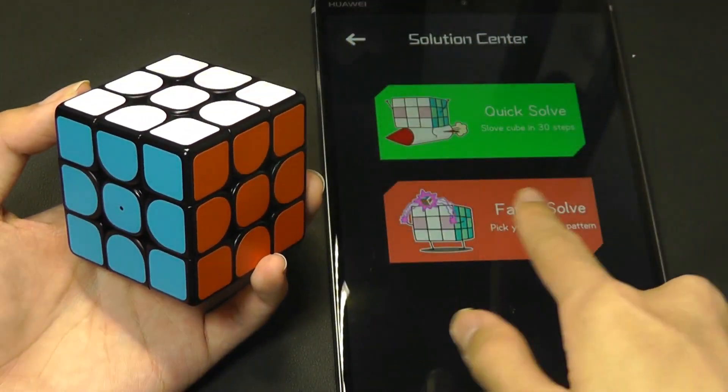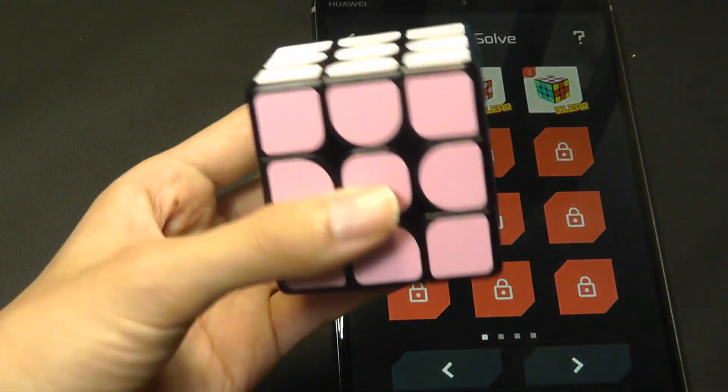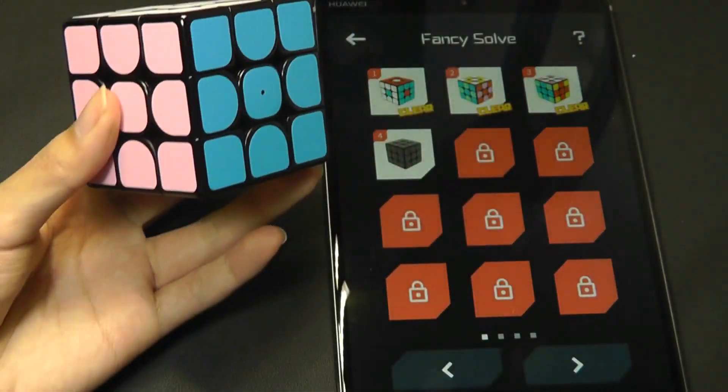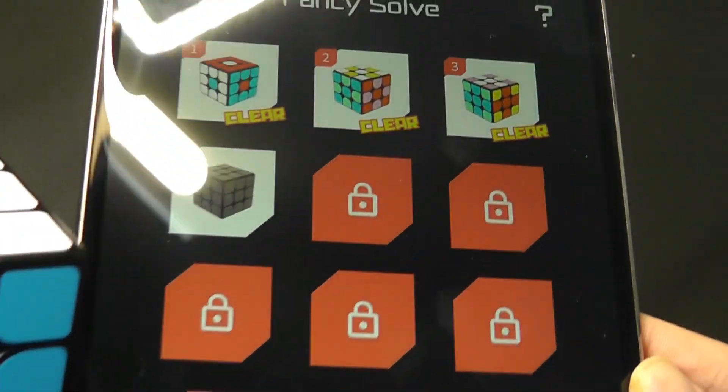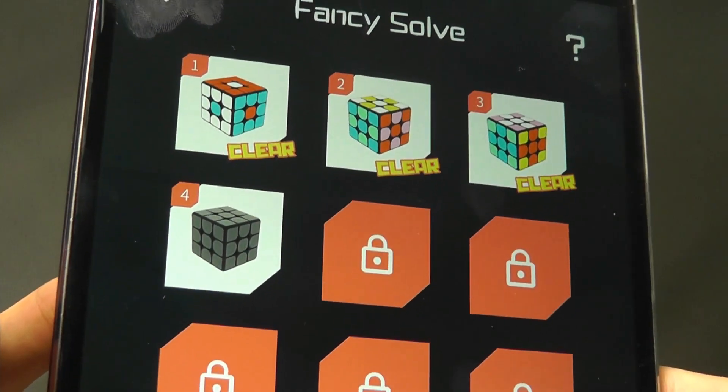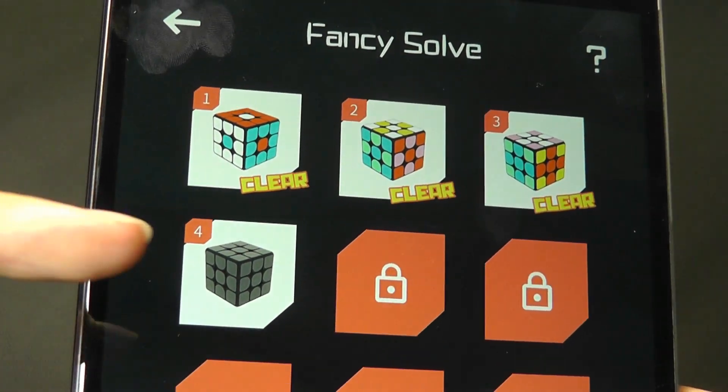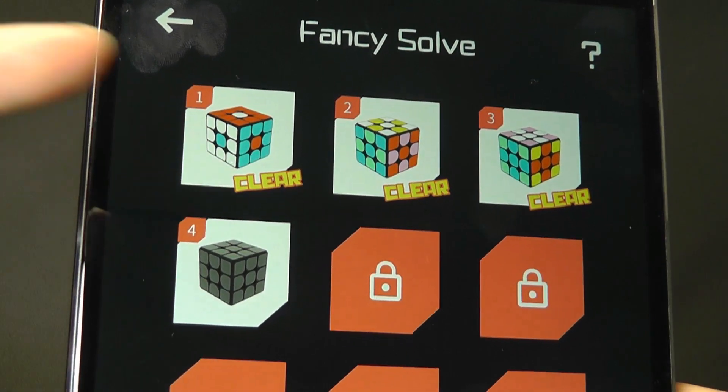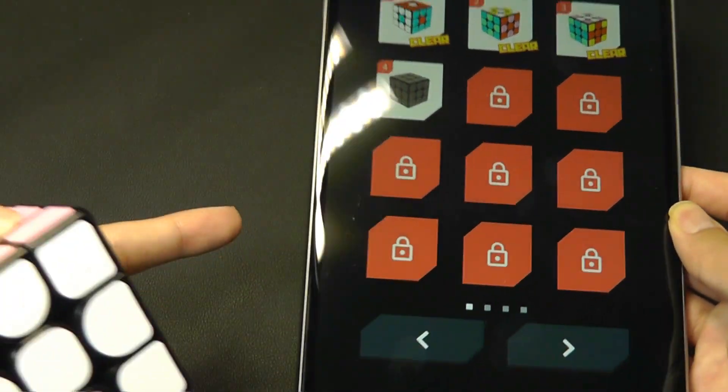There's also Fancy Solve, which is the second option. Instead of ending the cube in this regular state, you can have it with different patterns. For instance, a certain kind of cross sign on all four of the sides to mix a different color for the king's position. Something like that, so every single one of these different designs.